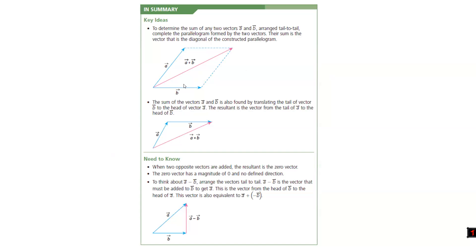So here's the summary for addition: tail-to-tail works both ways — for addition it gives a diagonal of the parallelogram you can construct from the two vectors. But a more convenient way is to transfer a vector to the nose of another one. The same applies for subtraction.